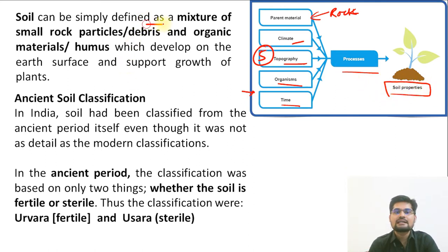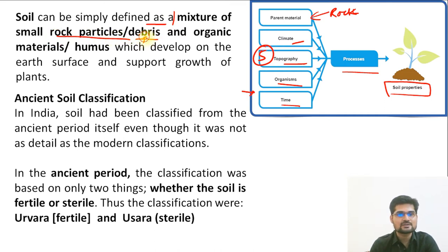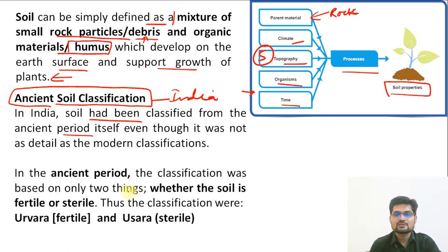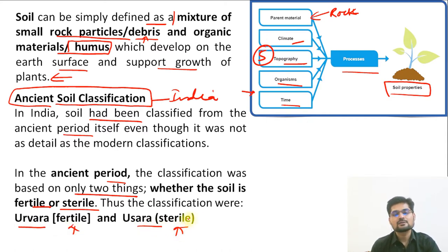Soil can simply be defined as a mixture. Soil is not an element, not a compound, but rather it is a mixture of small rock particles, debris — that is fragments of smaller rocks — and organic materials, also known as humus, which develop on the earth's surface and support growth of plants. In ancient India, the classification was based on two things: whether the soil is fertile or sterile. Urvara soil was fertile and Usara soil was sterile.